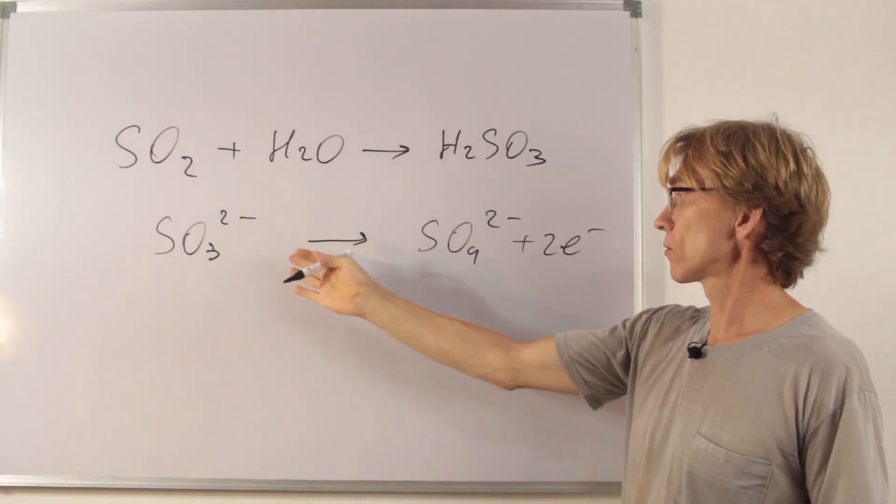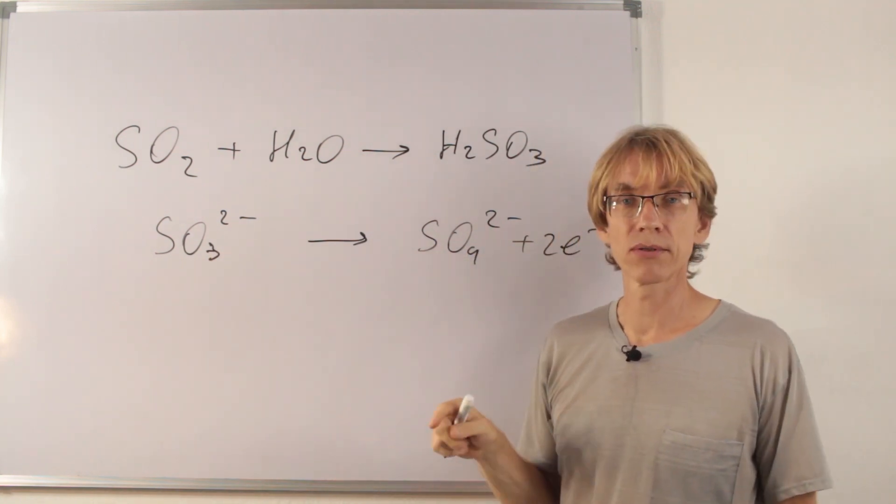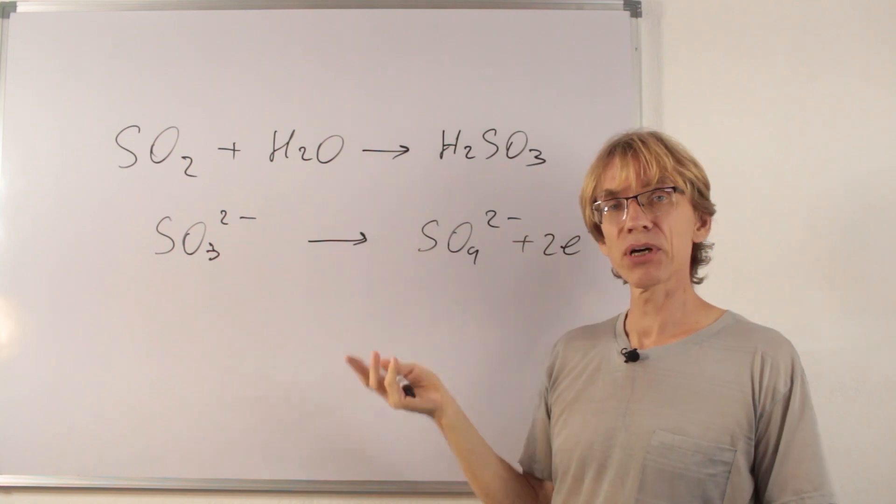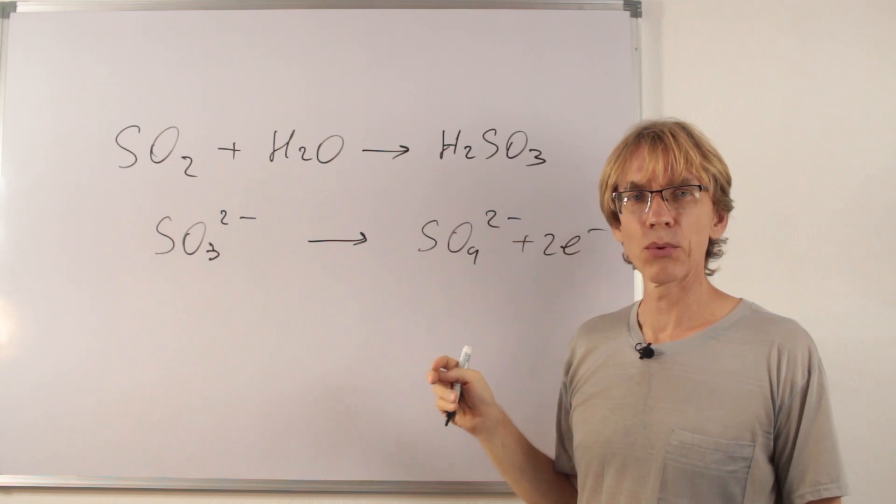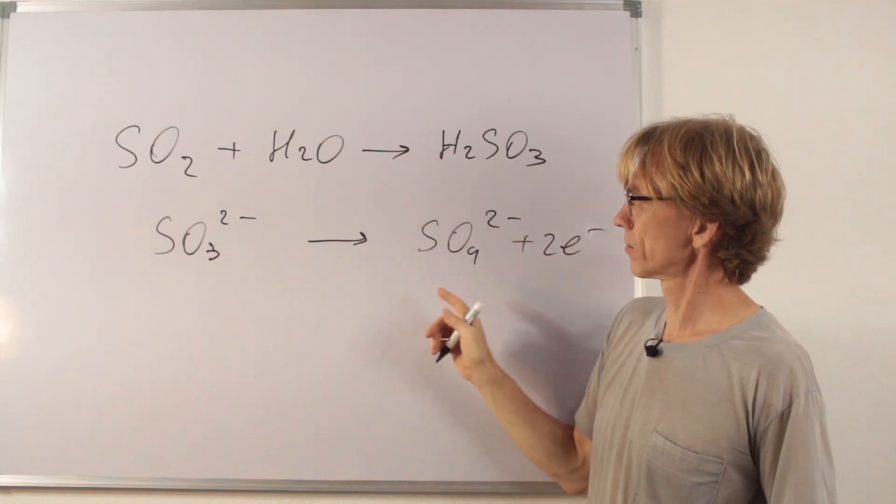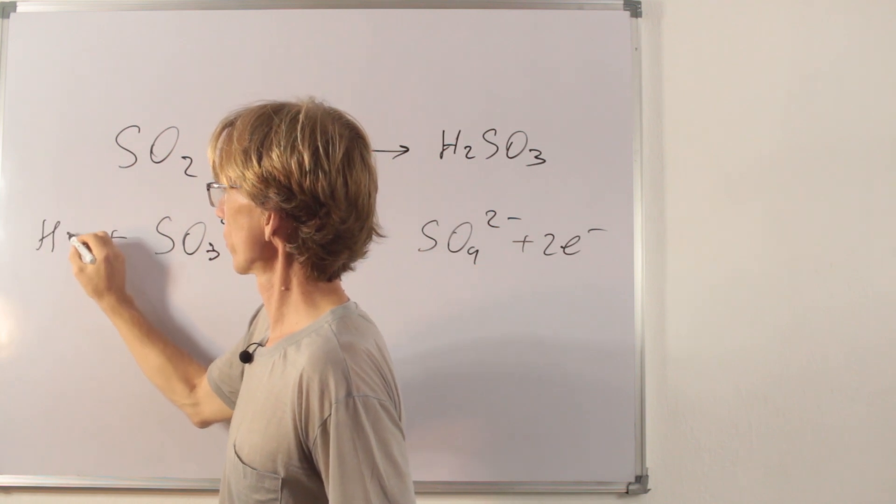To get a balanced equation, we just take care of oxygens with water and of hydrogens with hydrogen ions. That's the general rule of balancing half equations in acidic conditions. So, I have to add one water molecule here.